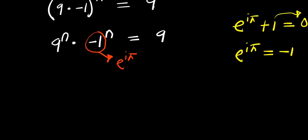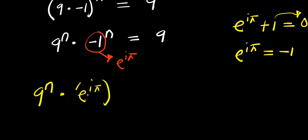So from here, we have 9 power n times e power i times pi, raised to the power of n, equals 9.